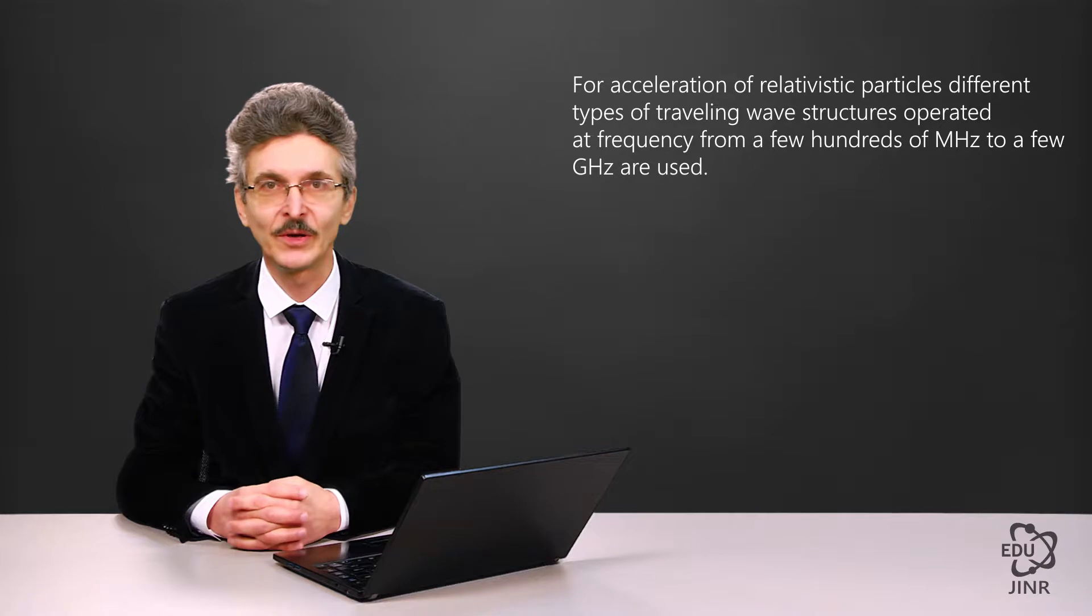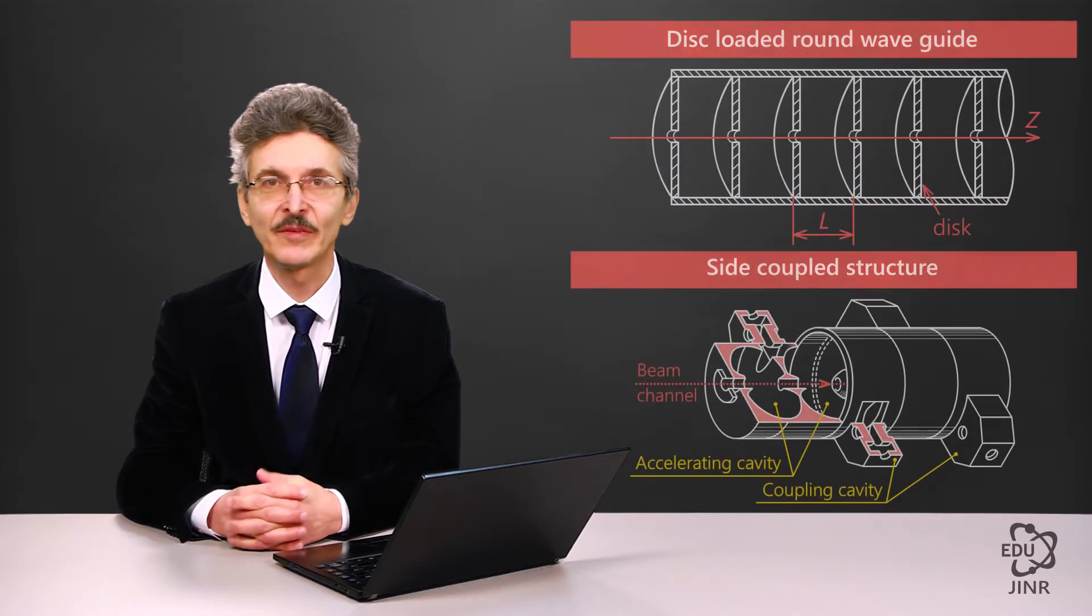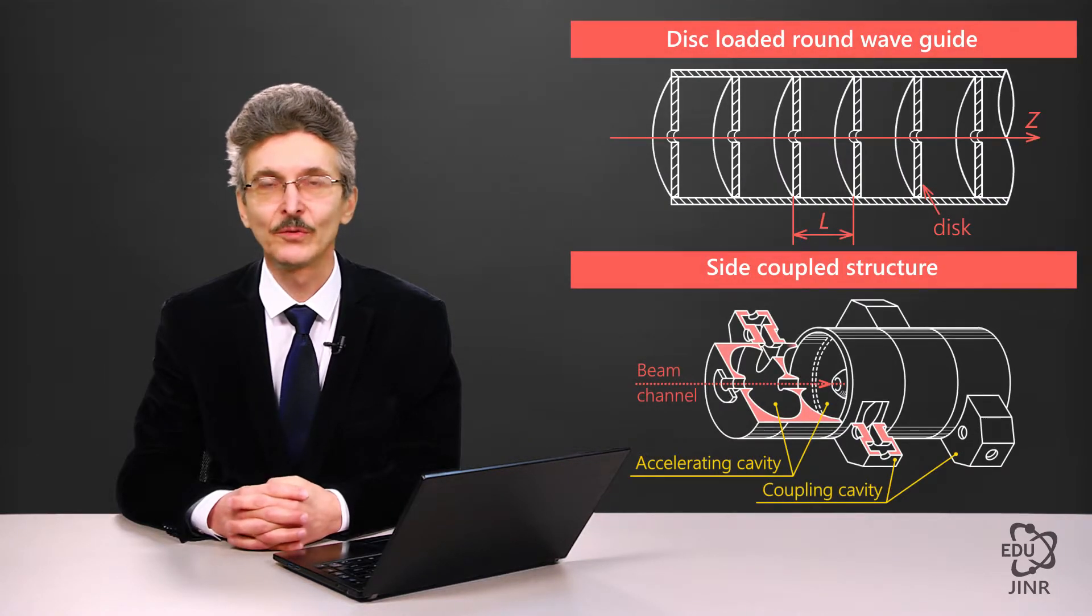The challenge of traveling electromagnetic wave acceleration is that the phase speed of an electromagnetic wave in a smooth circular waveguide is always higher than the speed of light. The acceleration needs to be done with a wave, the speed of which corresponds to the particle speed. That is why the wave in the waveguide has to be slowed down.